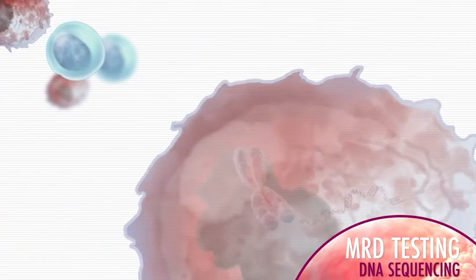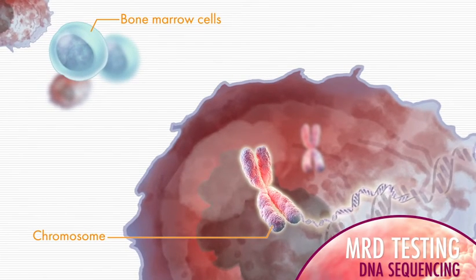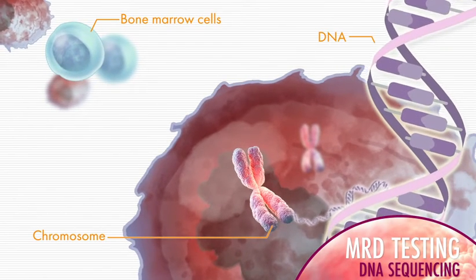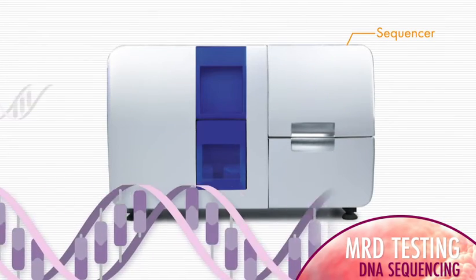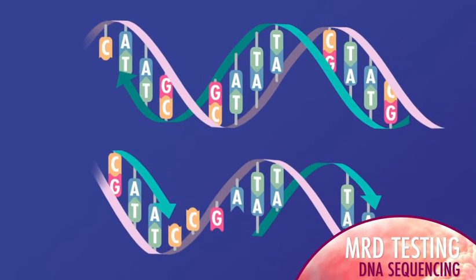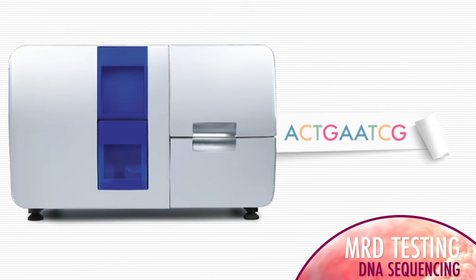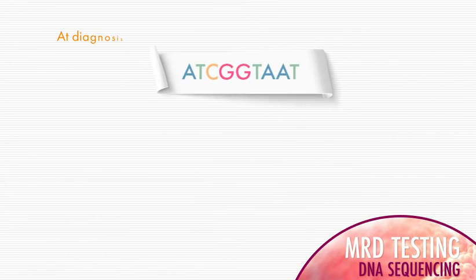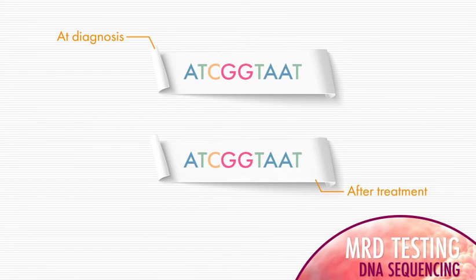The other MRD test is the sequencing test. In this test, DNA is usually taken from the cells of your bone marrow sample and then run through a machine called a sequencer. The sequencer looks at the structure of the DNA — that is, the genetic makeup in the cells of the bone marrow sample. By comparing the results of this sequencing test to results obtained from the bone marrow sample taken when you were first diagnosed, the healthcare team can determine if myeloma cells are present even after treatment.